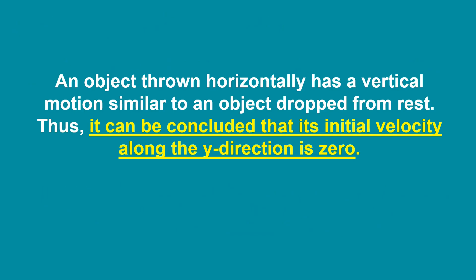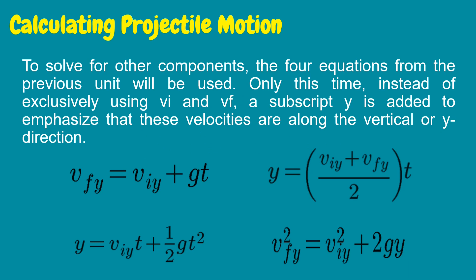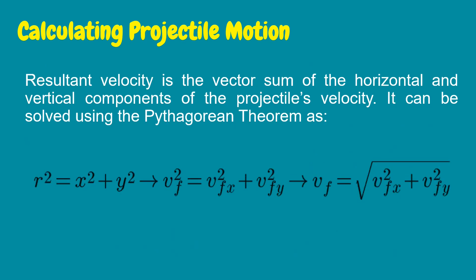An object thrown horizontally has a vertical motion similar to an object dropped from rest. Thus, its initial velocity along the y-direction is zero. To solve for other components, the four kinematic equations are used, with a subscript y added to emphasize velocities along the vertical direction. Resultant velocity is the vector sum of the horizontal and vertical components, solved using the Pythagorean theorem: final velocity equals the square root of (final velocity along horizontal squared plus final velocity along vertical squared).